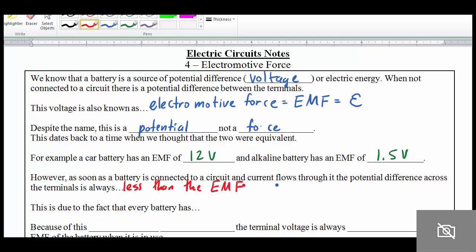So the EMF is the ideal or maybe the maximum potential difference the battery can offer, and yet whenever we put it to work to actually do something, we get less than that voltage out of it.